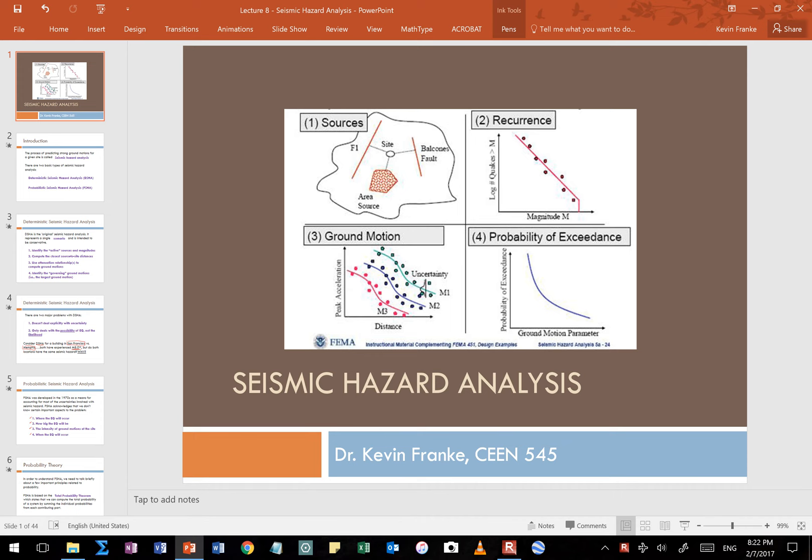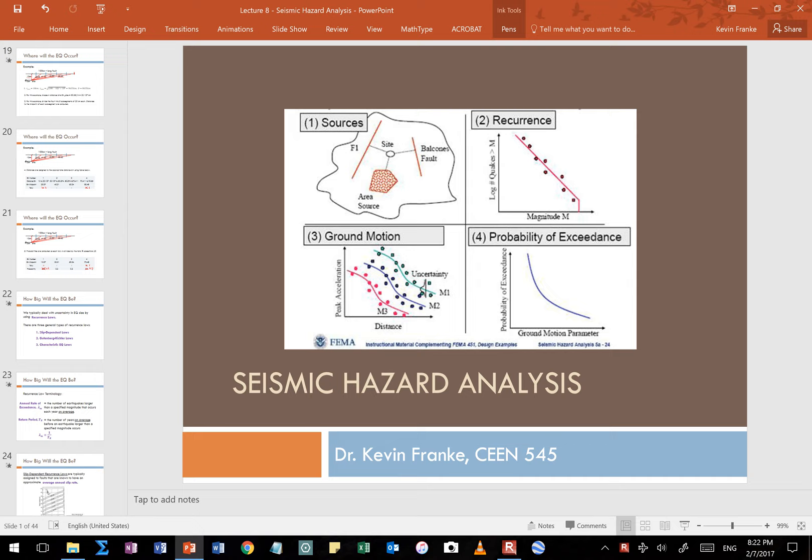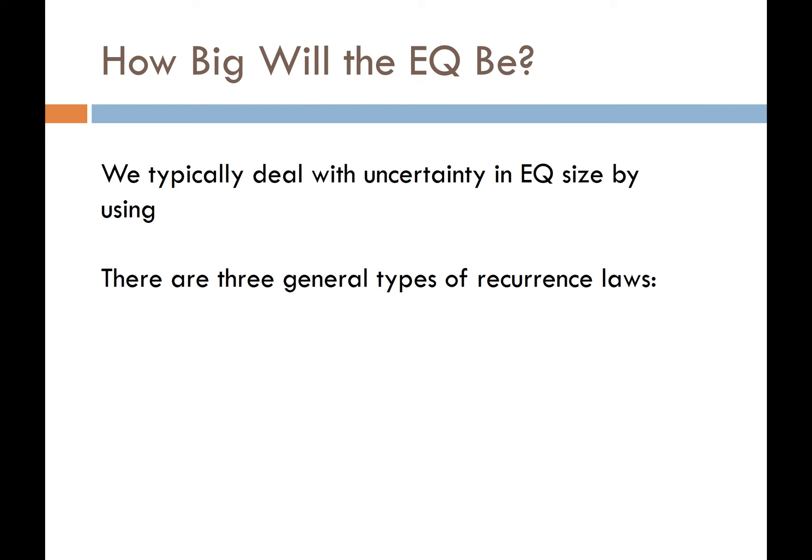So now I'm going to pick up where we left off and talk about uncertainty dealing with how big the earthquake will be — specifically, uncertainty dealing with magnitude. When we talk about uncertainty with magnitude, this is handled with what we call recurrence laws.